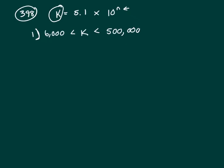So I've written down clue one: k is between 6,000 and 500,000. But we want to figure out exactly what is k, because this is a range.